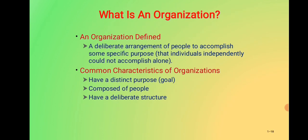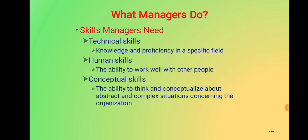An organization is a deliberate arrangement of people to accomplish some specific purpose. Individuals independently cannot achieve what a group of people working together can. The common characteristics of an organization are: having a distinct purpose (a goal), being composed of people, and having a deliberate structure. Managers need three skills: technical skills — knowledge and proficiency in a specific field; human skills — the ability to work well with other people; and conceptual skills — the ability to think and conceptualize about abstract and complex situations concerning the organization.